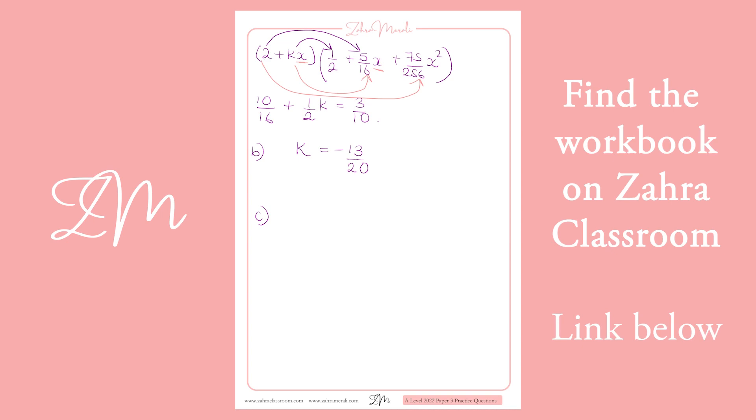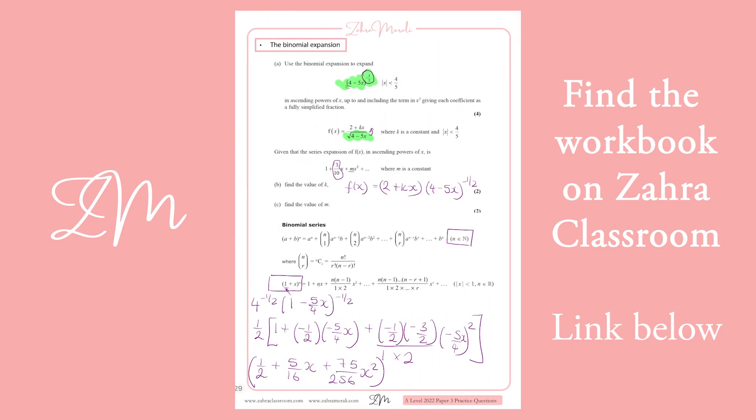So we end up with 2 times 75 over 256, plus 5 over 16 times your k, which was minus 13 over 20. And all together, stick that all in your calculator in one go. It gives you 49 over 128. So m equals 49 over 128. Don't be scared if you get weird numbers in the exam. It does happen. Hope that's useful.